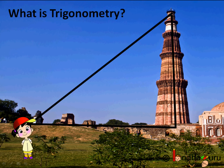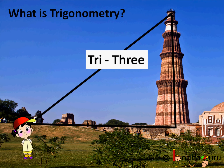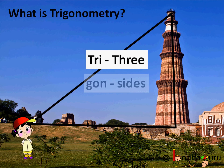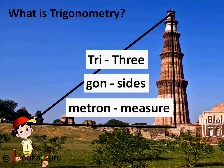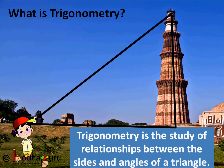The word trigonometry is derived from the Greek words: tri meaning three, gon means sides, and metron means measure. That is, trigonometry is the study of the relationship between the sides and angles of a triangle.